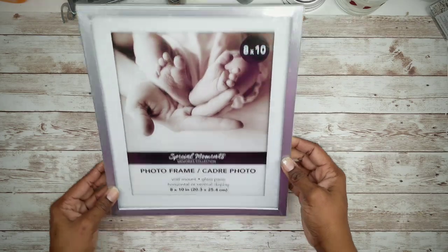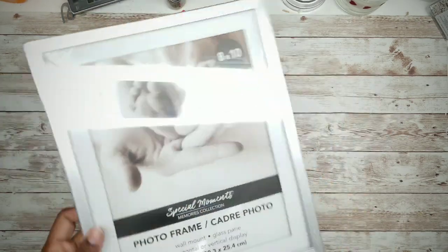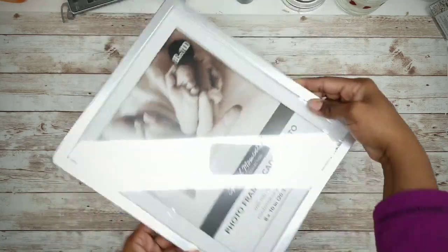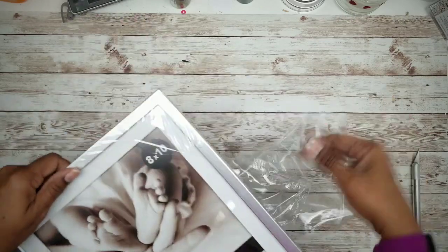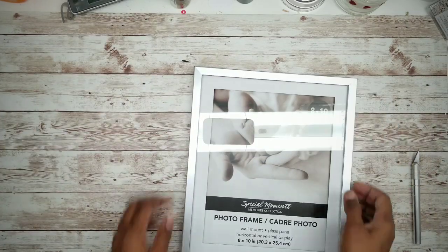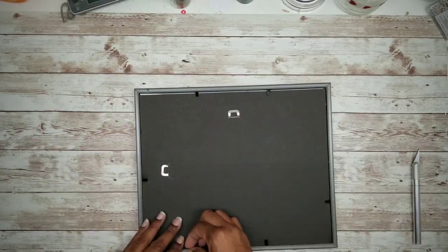So for this project, I will be making an 8 x 10 version of this frame. You want to make sure you choose the shadow box style frames from Dollar Tree for this project. Go ahead and remove all the plastic and then we want to go ahead and flip it over and remove everything from the frame.